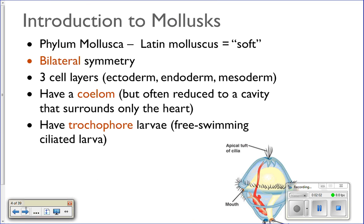Other things that mollusks share: they have bilateral symmetry. They have three cell layers — the endoderm, ectoderm, and mesoderm. They do have a coelom, but in most mollusks it's reduced to just a cavity that surrounds the heart. Many of them, especially marine species, will have a larval stage and will be meroplankton — spending only part of their life as plankton. They all share a similar-looking larva called a trochophore larva.